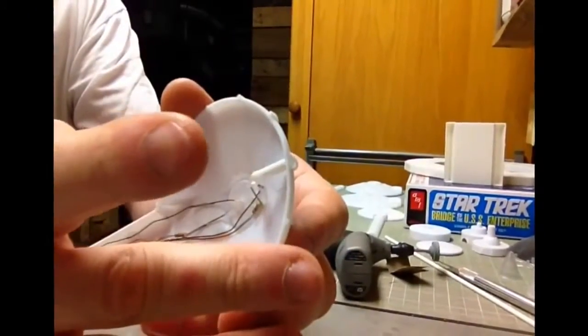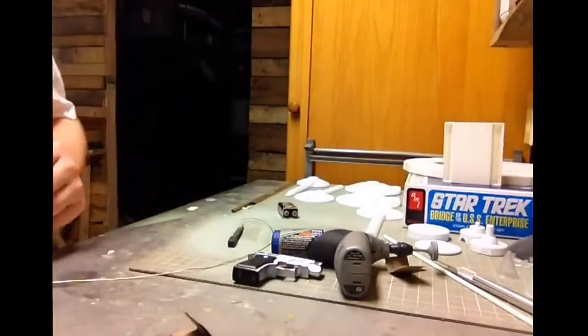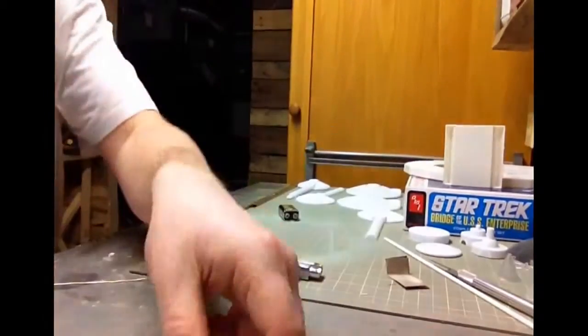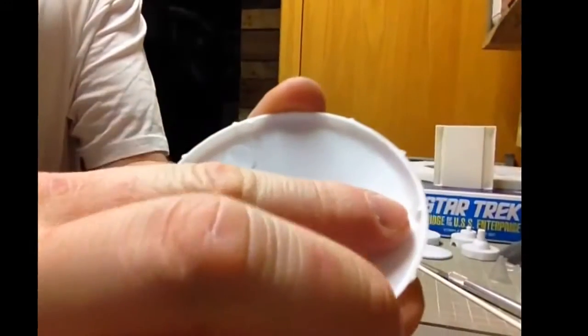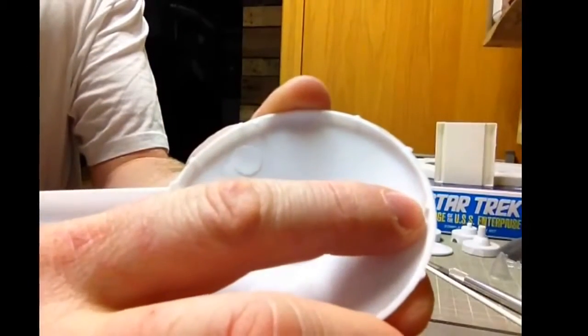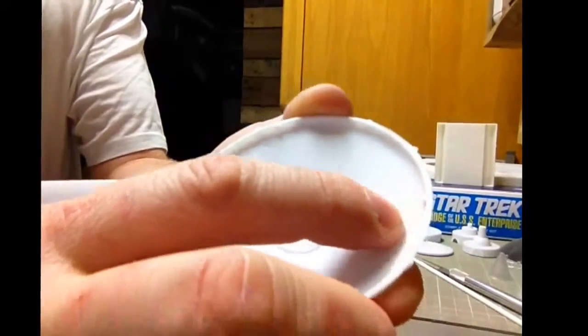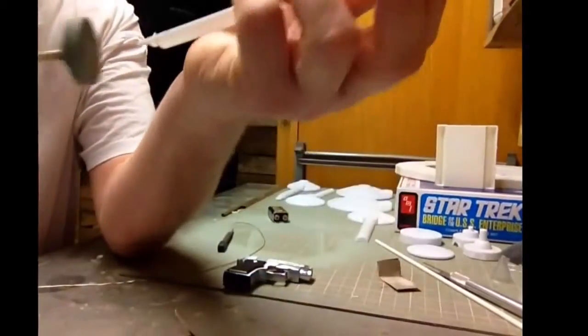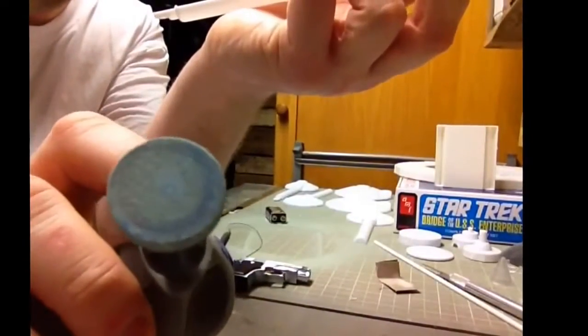In order to do that, I have to grind away here where the alignment pin was and kind of deepen it a little bit. So I use my Dremel and this grinding tool.